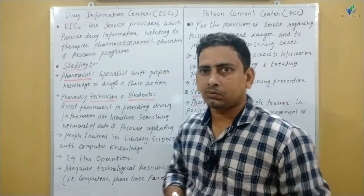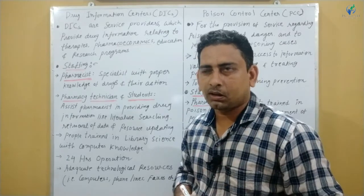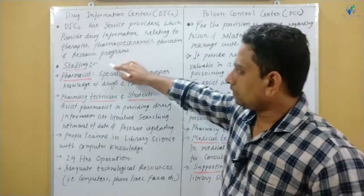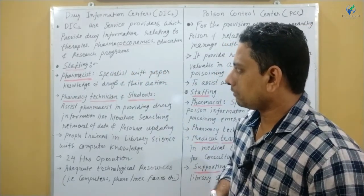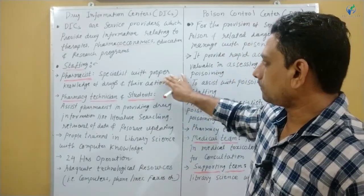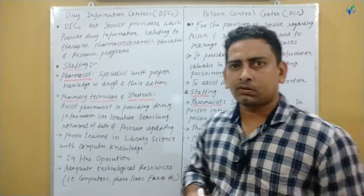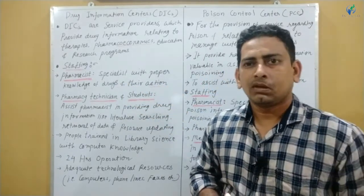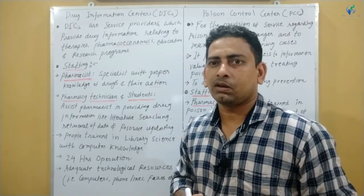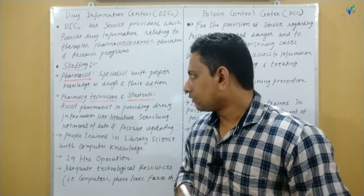Here we will mainly focus on the staffing — which staff will work in a Drug Information Center. In the staffing of Drug Information, there will be the Pharmacist as the main person. He will be a specialist with the proper knowledge of drugs and their access. That means drug-related information, and also they should have information regarding their effects and side effects or adverse effects.